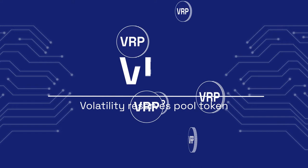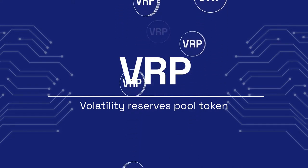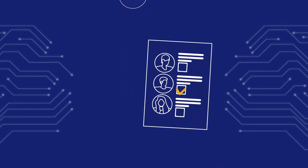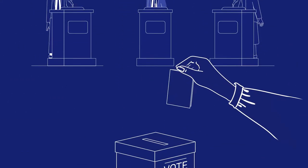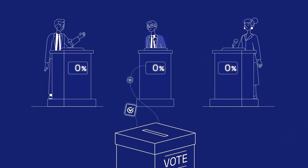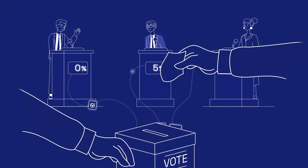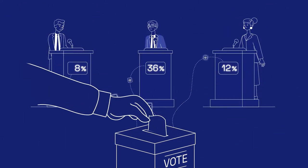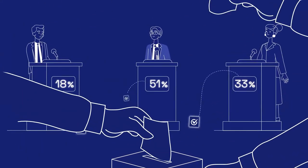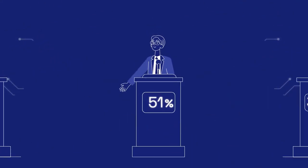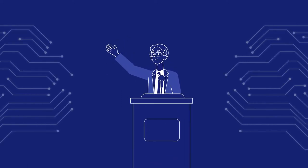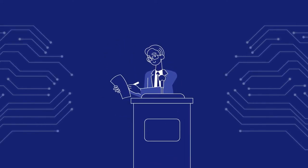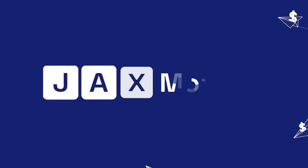Volatility Reserves Pool VRP tokens are mainly used as a way to receive power, allowing you to vote for a governor. The governor is appointed by the majority — 51% of the votes. Once elected, he can set the yield for all actors engaged in the DAX Money platform.